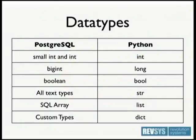Using PLPython, it will coerce your data types for you in pretty sane ways. Small ints and ints become Python ints, big ints become longs, booleans become bools, and all the different text types become strings. SQL arrays become lists, and this works coming out of the function too — return a list and it returns a SQL array. Custom types are represented as dictionaries. In Python 3, it does the right things — ints are just ints, and strings come in and out as Unicode as they should.